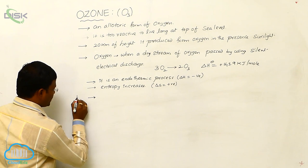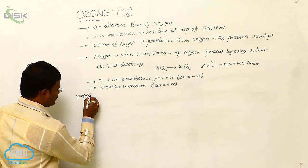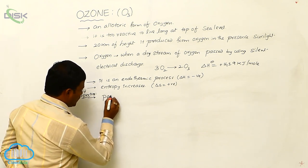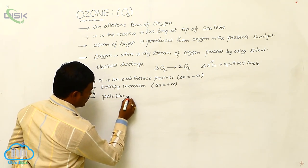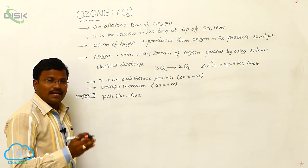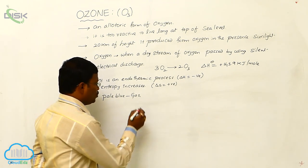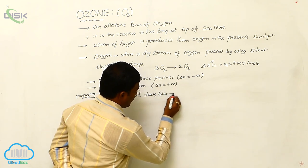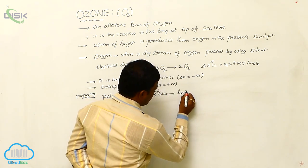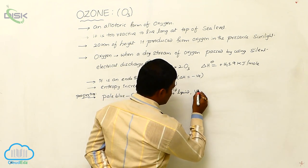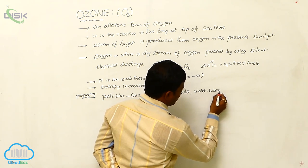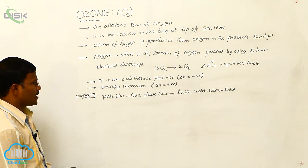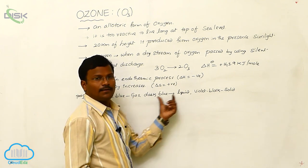Now let us look at the physical properties of ozone. Ozone is a pale blue colored gas in gaseous form. In liquid state, it appears dark blue in color. In solid state, it is violet-black in color.